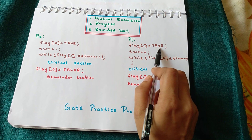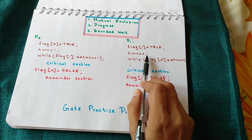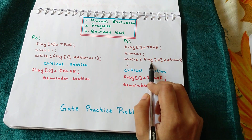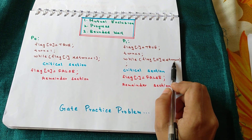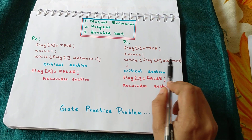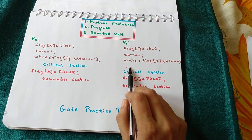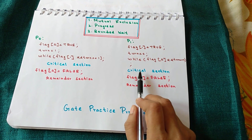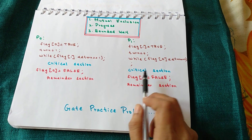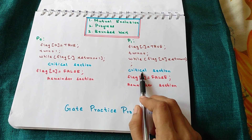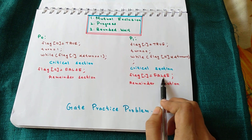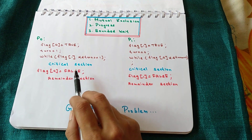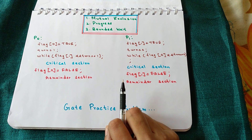For process P1: it sets `flag[1]` to true and sets `turn` to 0. Then it executes a while loop checking whether `flag[0]` is true and `turn == 0`. When both are true, P1 loops infinitely. When one condition becomes false, P1 enters its critical section, executes its code, and then sets `flag[1]` to false — meaning if another process wants to enter the critical section, it can do so.